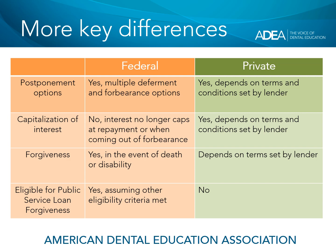Regarding forgiveness provisions, with federal loans, certainly in the event of death or disability, the debt is forgiven. With private loans, it depends on the terms set by the lender. Additionally, federal loans are eligible for forgiveness with the Public Service Loan Forgiveness Program, assuming you meet the eligibility criteria. Private loans are not eligible for Public Service Loan Forgiveness.